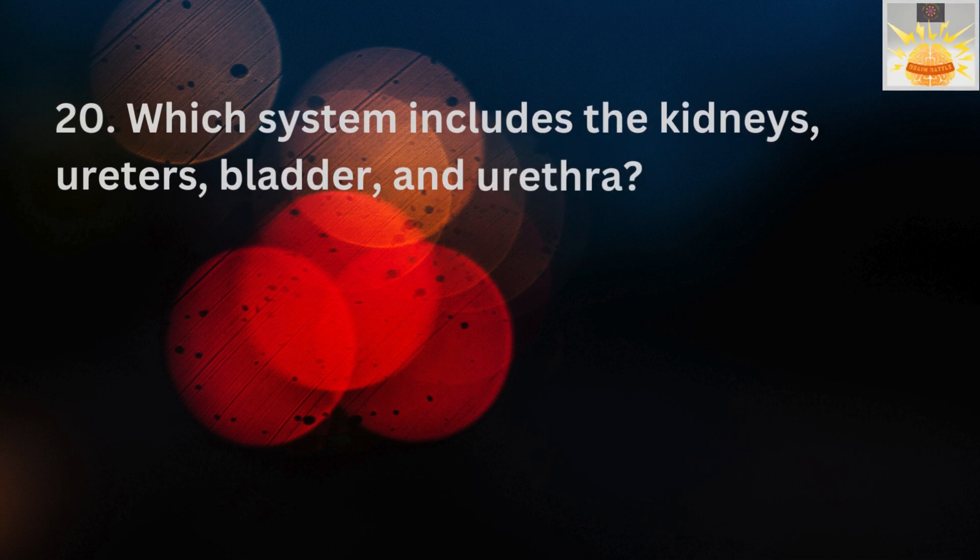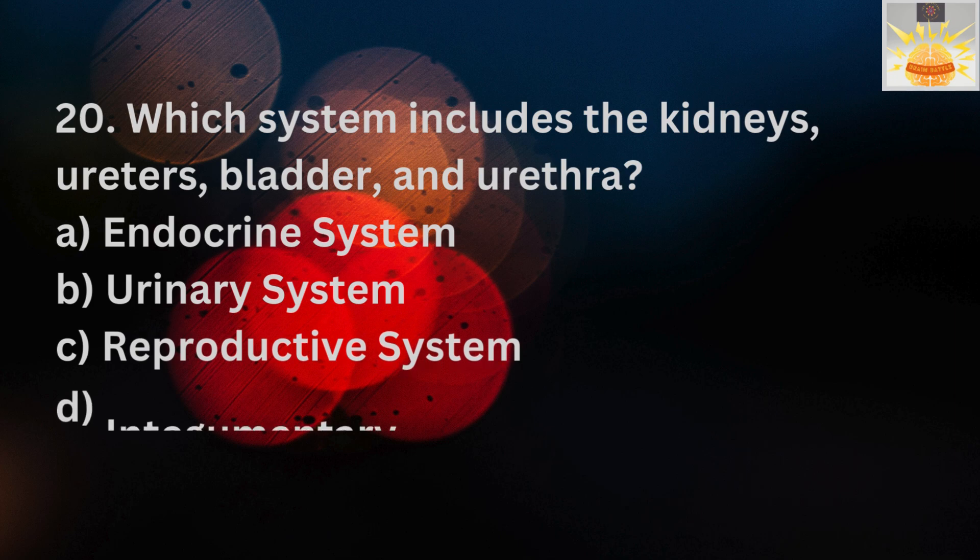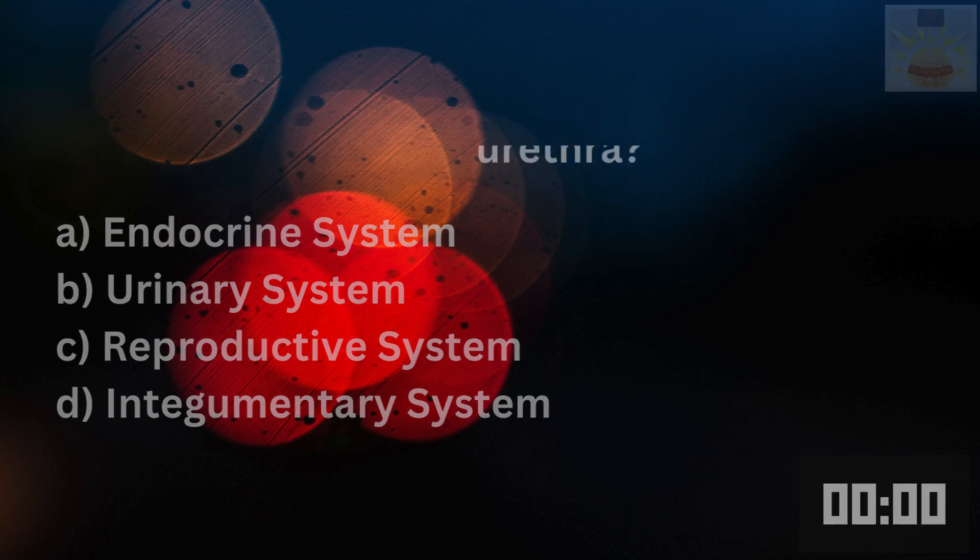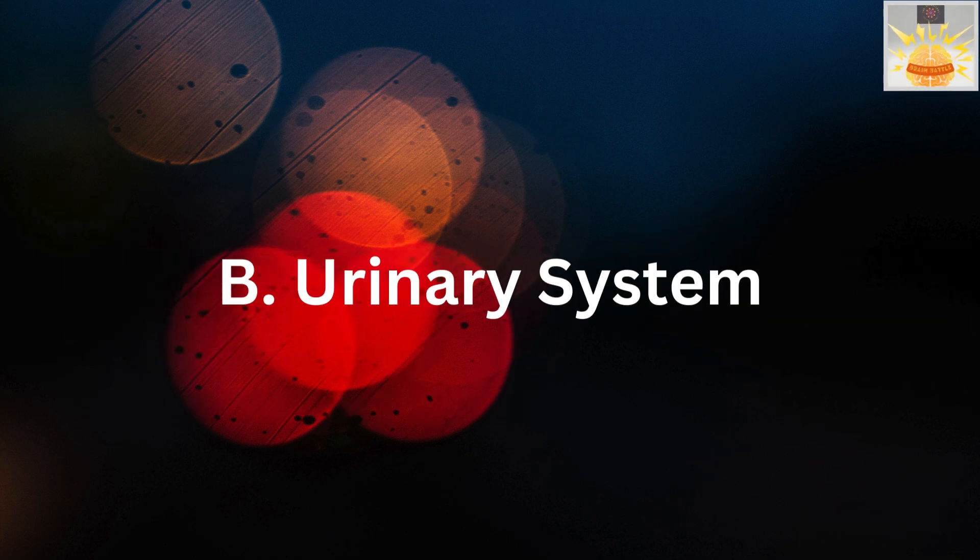Now the very last question today. Which system includes the kidneys, ureters, bladder, and urethra? A. Endocrine system. B. Urinary system. C. Reproductive system. D. Integumentary system. And the right answer is B. Urinary system.